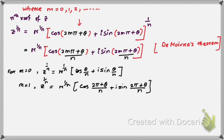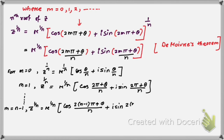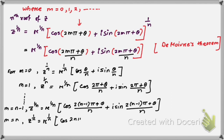Similarly, if we put m = n − 1, we get the expression with (n−1) substituted, giving us that corresponding root. And if we put m = n, the result should repeat the first root.